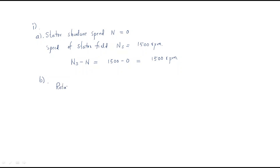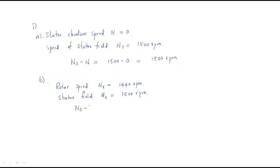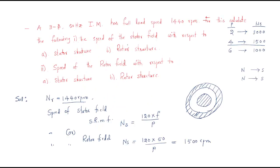For point B — the speed of the stator field with respect to the rotor structure — the rotor speed is 1440 rpm and the stator field rotates at 1500 rpm. The difference is 1500 - 1440 = 60 rpm. So the stator field rotates at 60 rpm relative to the rotor structure.